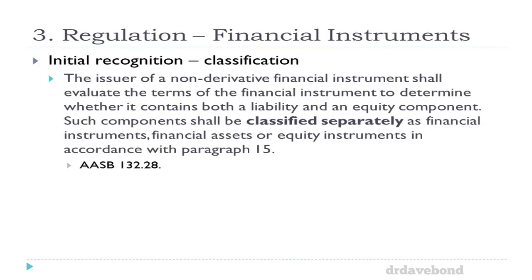Once you've come up with that split, the amortization schedule is the same as before — you can pretty much ignore the equity component for most of what follows. The only point where it differs is when they convert. If they don't convert, nothing changes. If they convert, the liability — whatever its carrying value is on the day of conversion — disappears because there are no more cash flows. The equity component also disappears because the conversion option is no longer separate — it gets converted into share capital. So liability turns into equity, and the conversion option equity turns into share capital.